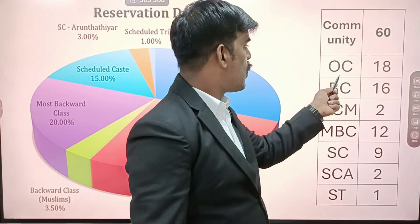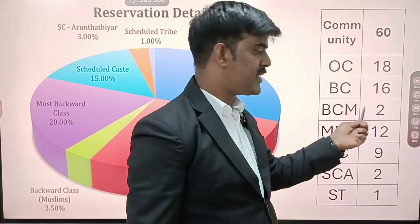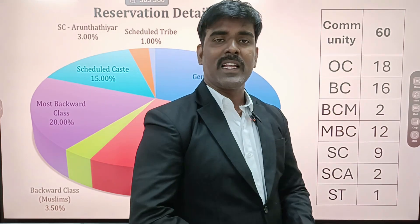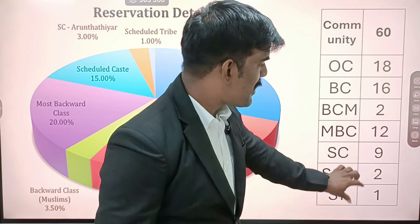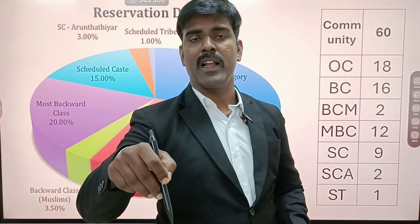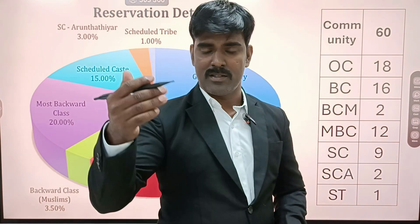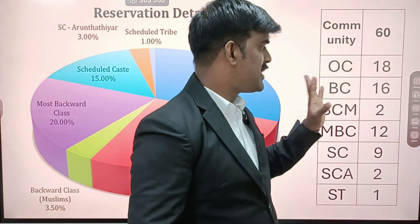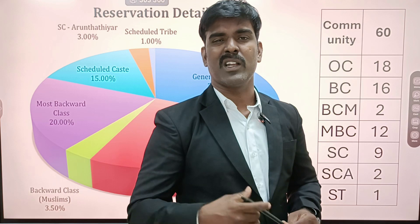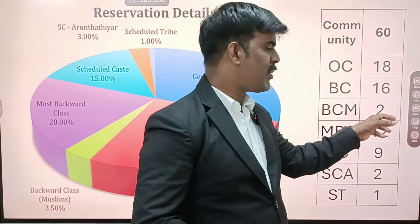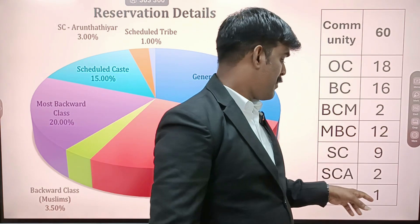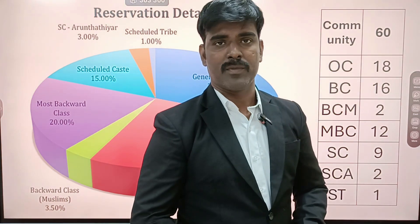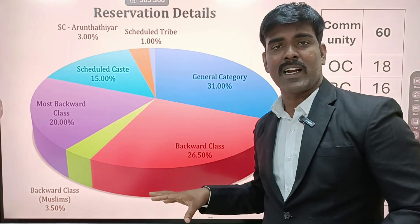BCM is 3.5 percentage, SCA is 3.5 percentage, Scheduled Caste is 1 percentage. For example, if there are 60 total seats: OC community gets 18 seats, BC gets 16 seats, BCM is 2 seats, MBC 12, SC 9, SCA 2, ST 1. BCM, SCA, and ST have very minimum seats. That's why in my department, if you go to the seat matrix or choice filling, you will understand. There are some doubts about the seats in the department.